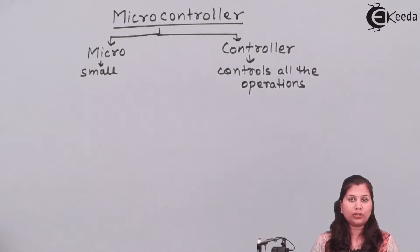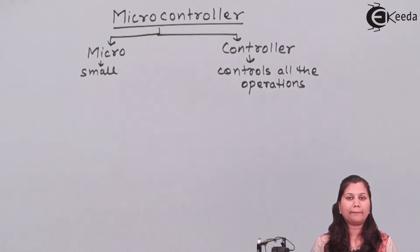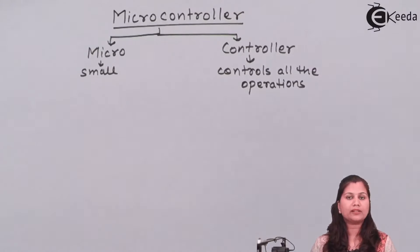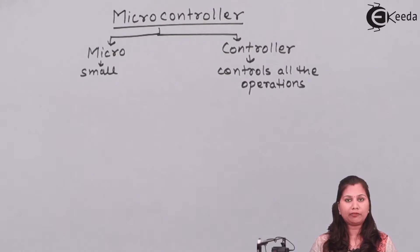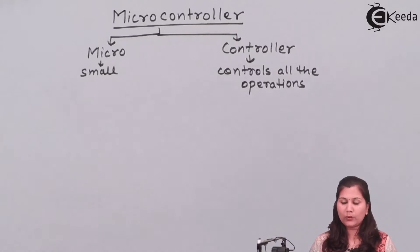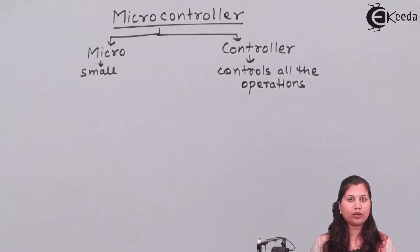A general microcontroller consists of various components. Memory is there, and this memory can be either RAM or ROM. RAM is the random access memory and ROM is the read only memory. So this microcontroller can have memory, serial input-output ports, peripheral devices, timers and counters — all those are present in the microcontroller.